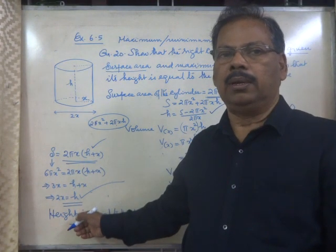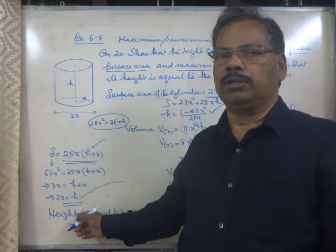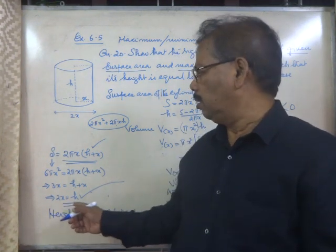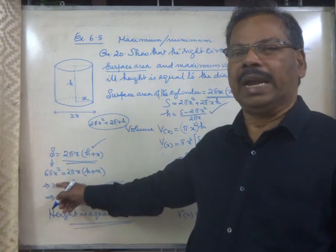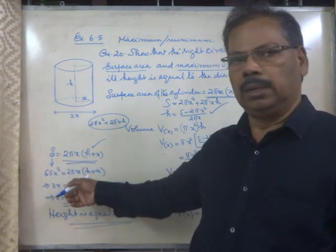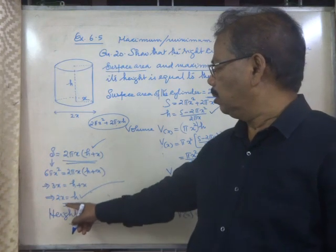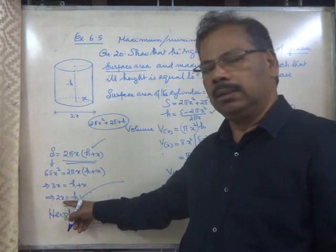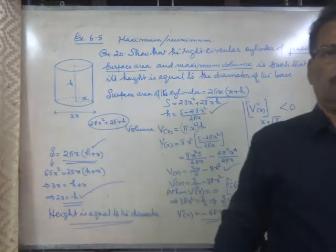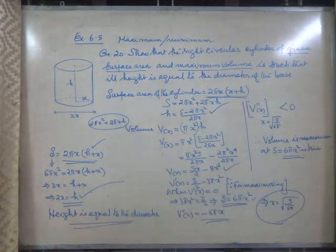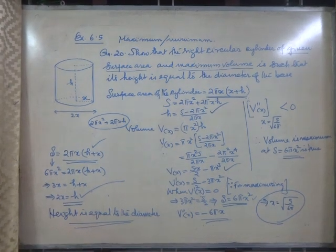When the volume is maximum, surface area will be equal to 6π times radius squared. In that case, the diameter will be equal to height. Thank you.